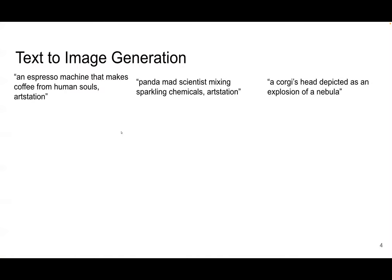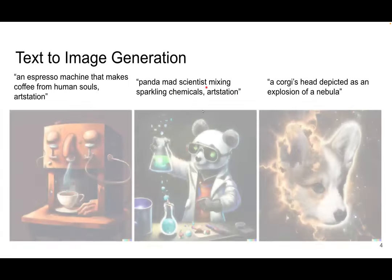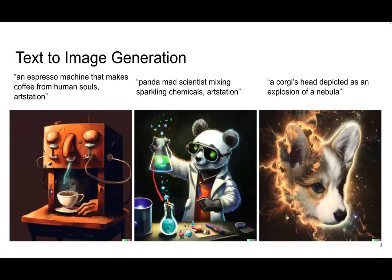To start with the background motivation: this paper is about text-to-image generation. In text-to-image generation, you start with a prompt — for example, a panda mad scientist mixing sparkling chemicals — and from that input, your model should be able to create a photorealistic image. In order to generate this image, the model needs to understand the concepts in the text, such as panda, scientists, and chemicals, make associations in the text domain, and translate that to the image domain.